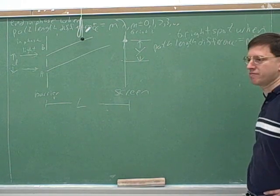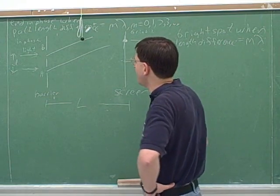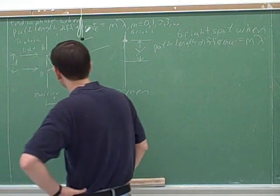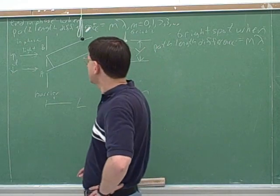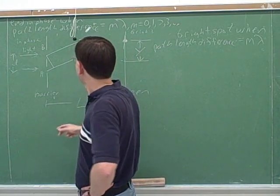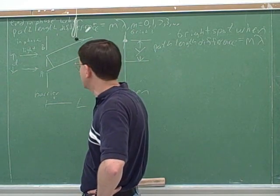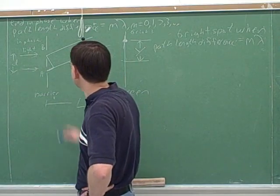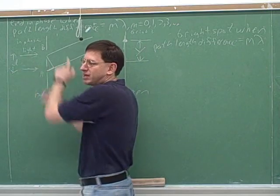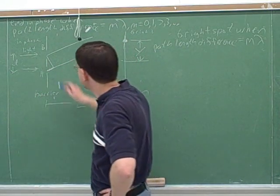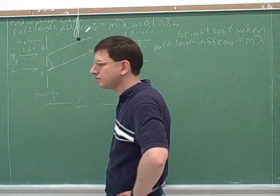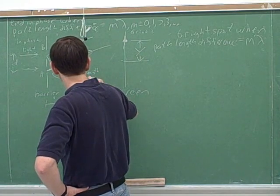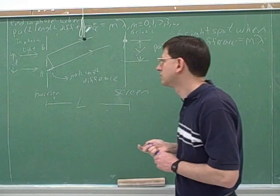All right, so again, we're going to have bright spots where the path length difference is m times lambda. So how can we figure out the path length difference? Well, here's one ray of light, here's another ray of light. Let's draw this reference line here. So notice that we can see here that ray A is going the greater distance. Ray A is going the greater distance. But what's the extra distance that it's going? It's this length here. This is the extra distance that A is going. Now this is just an approximation, but approximately speaking, this is the extra distance. From this point on, they have approximately the same distance to go. It's just this little leg at this little right triangle that I drew that is our path length difference.